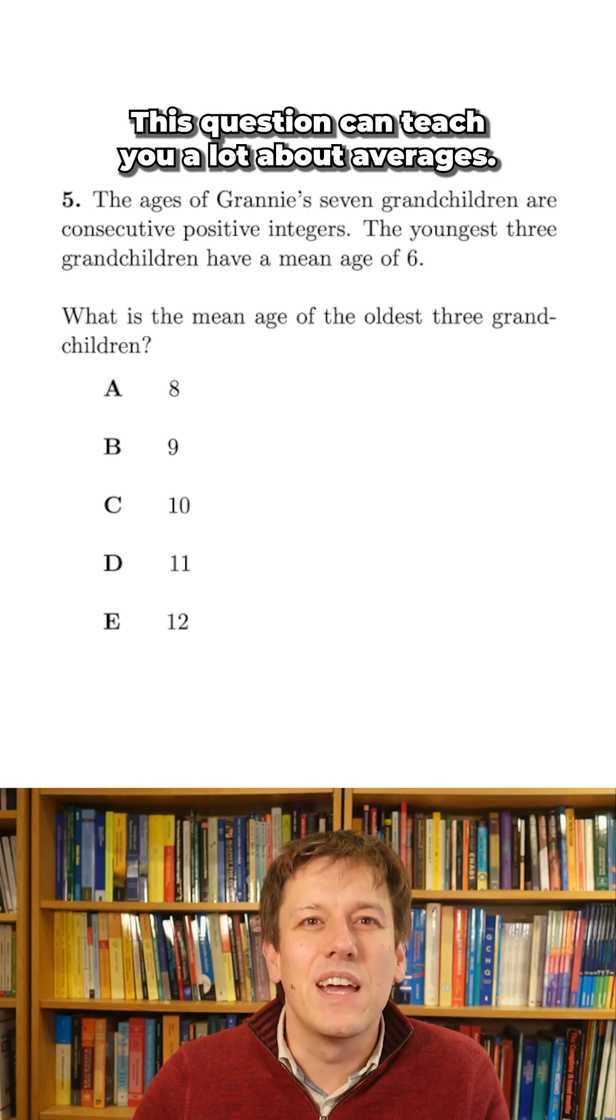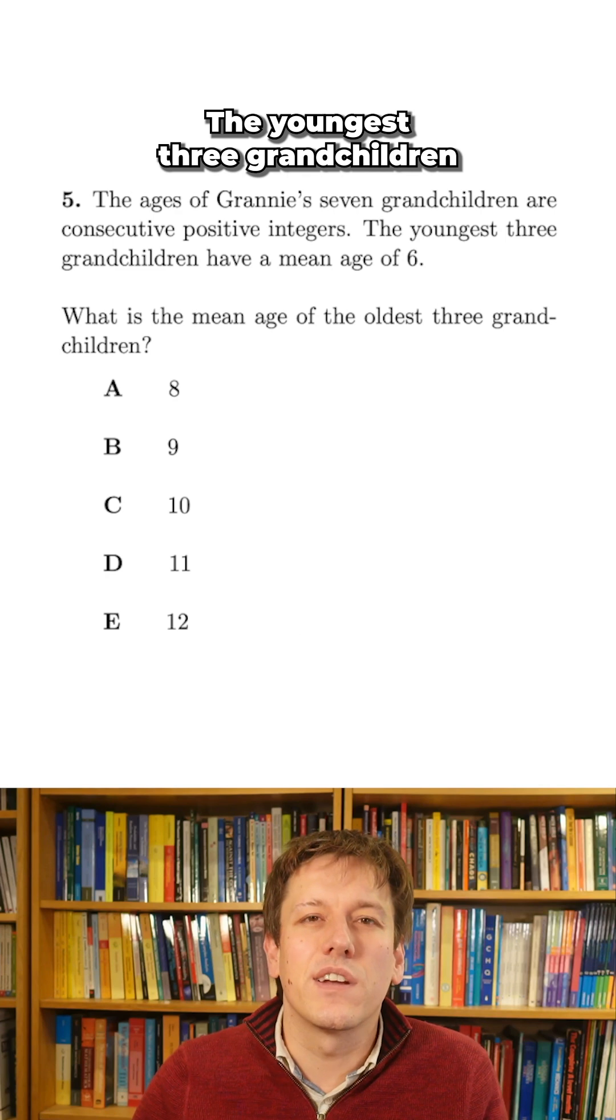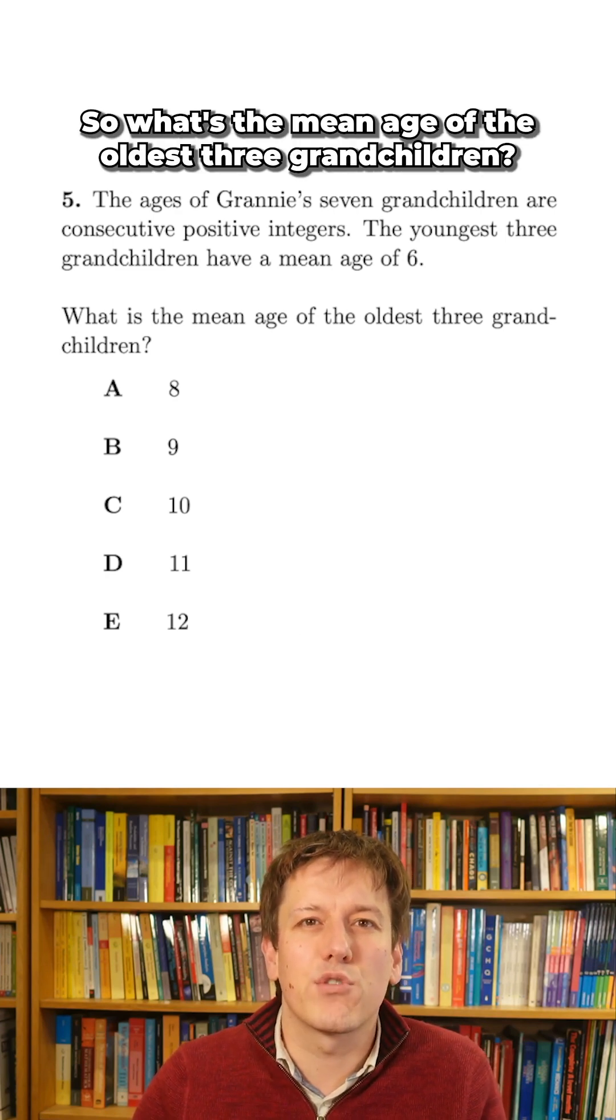This question can teach you a lot about averages. The ages of granny's seven grandchildren are consecutive positive integers. The youngest three grandchildren have a mean age of six, so what's the mean age of the oldest three grandchildren?